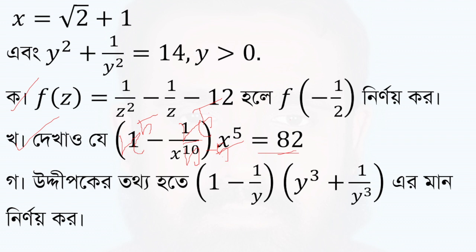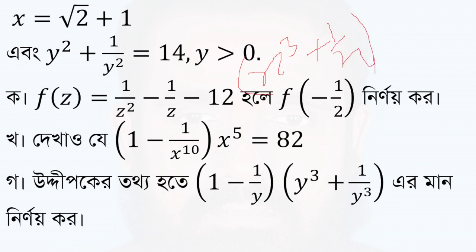So x to the power 5 minus 1 by x to the power 5 — this is the average in the expression. Then x to the power 5 minus 1 by x to the power 5. We also need x to the power 5 plus 1 by x to the power 5. This is the part on the left hand side.